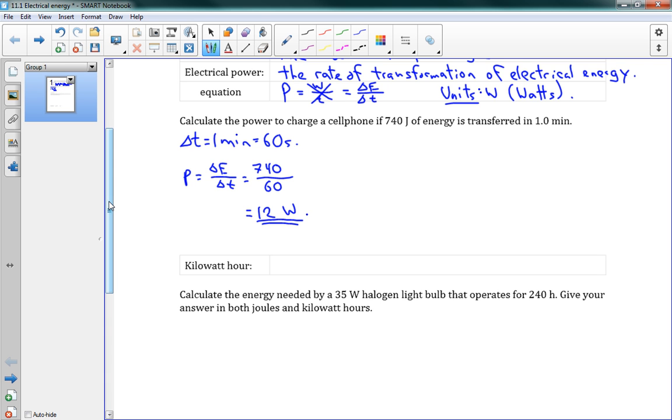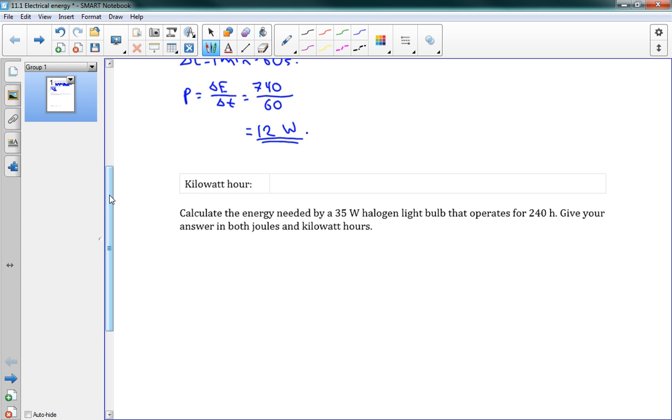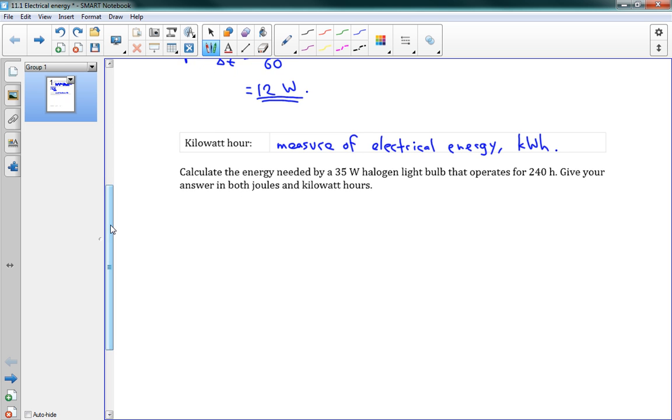That's the idea in this unit. We've got power and energy. We often talk about energy in terms of joules. That last problem had energy as 740 joules. But another way to write energy is using this new unit called the kilowatt hour. The kilowatt hour is a measure of electrical energy. We looked at that a bit before when talking about different types of energy. We've got one more problem here. Calculate the energy needed by a 35 watt halogen light bulb that operates for 240 hours. Give your answer in both joules and kilowatt hours. The reason we use kilowatt hours is because it's really easy a lot of the time.